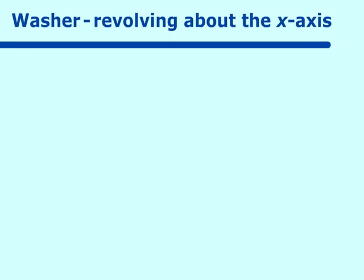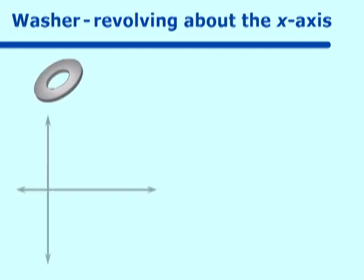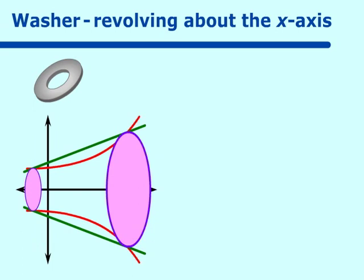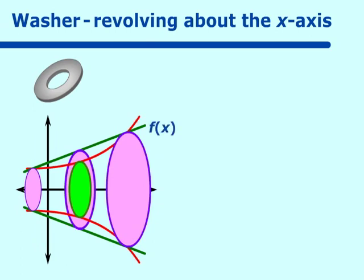Let's go to another concept: washers. If you think of a washer like one that would go in a faucet, it has an inner and outer circle. If we have two functions — one curve and maybe a line — and revolve them about the x-axis, we get a three-dimensional object. When we look at the circles, we have an inner circle and an outer circle, creating a washer.